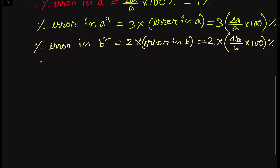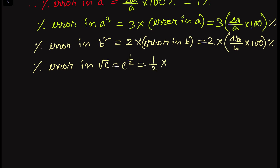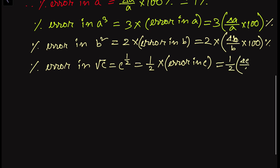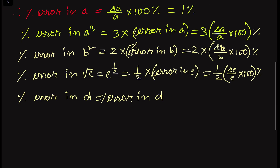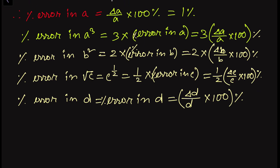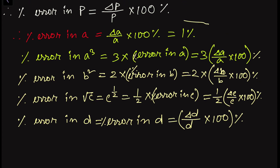Similarly, the percentage error in root C: root C is C to the power one-half, so the power one-half comes as a coefficient, giving half times delta C divided by C into 100. The percentage error in D has no power, so it is simply delta D divided by D into 100.